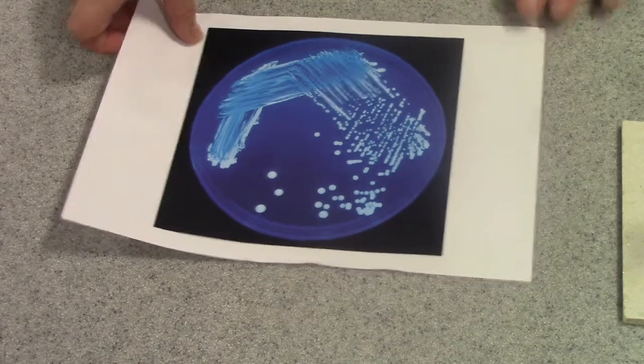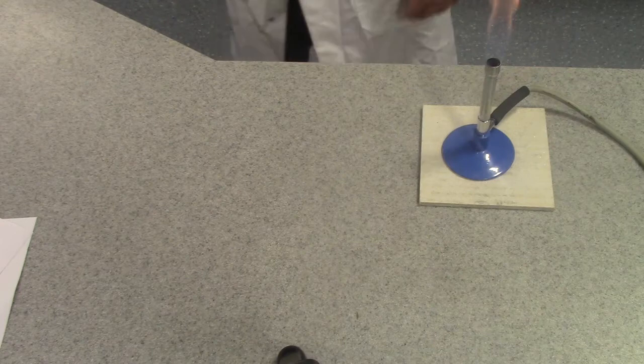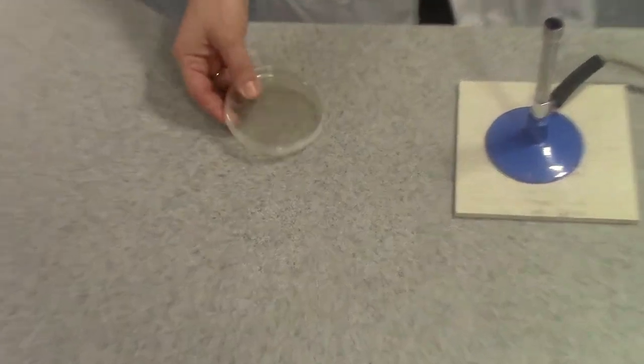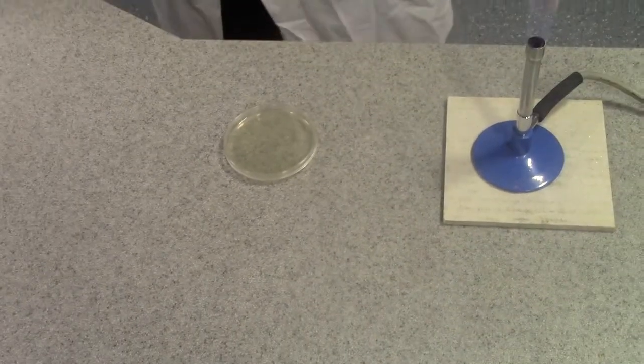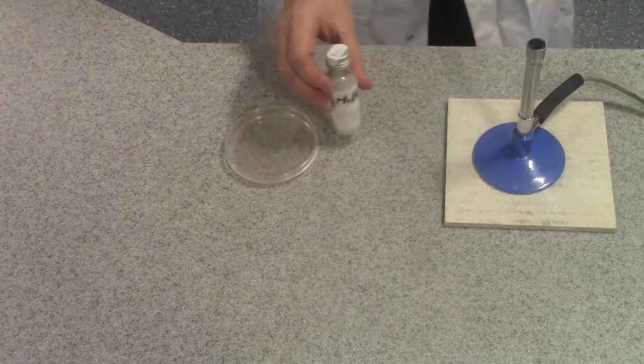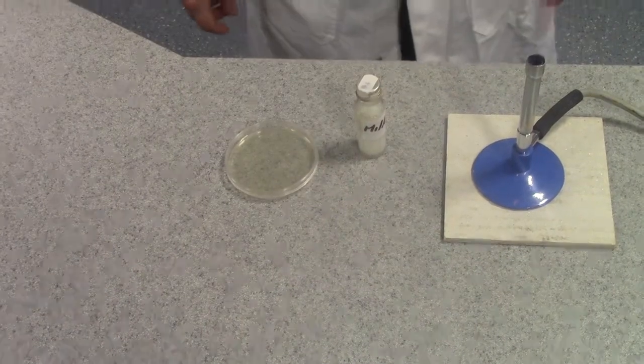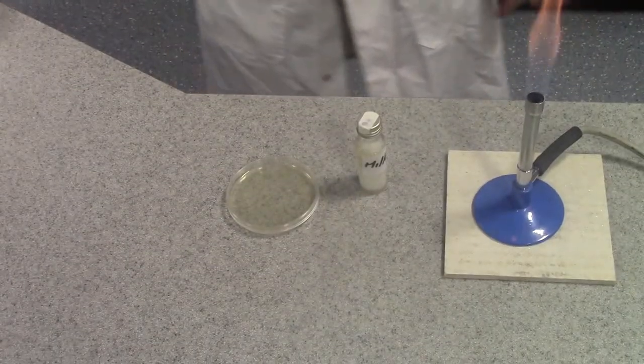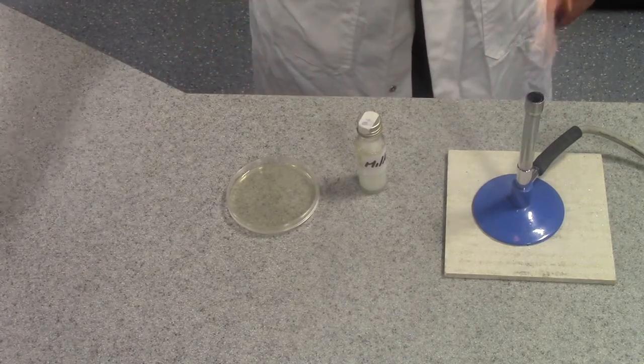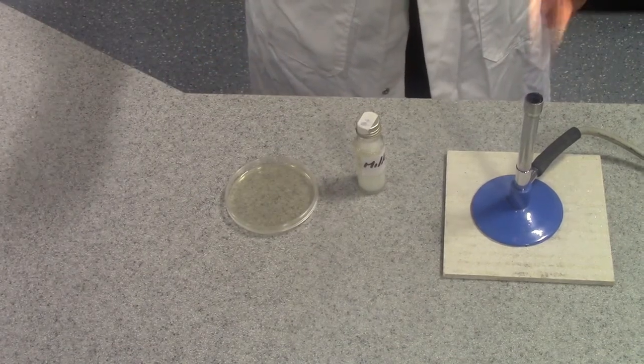Now in order to carry out this procedure, you will need a Bunsen burner, a petri dish containing nutrient agar, you'll need your sample, today I'm going to use a sample of five day old milk, and you will need a wire loop, which is a standard piece of biological apparatus.